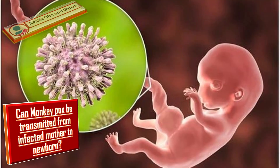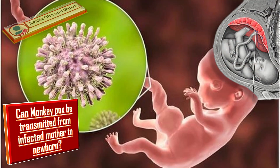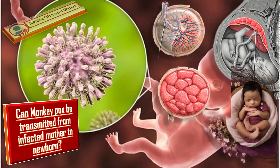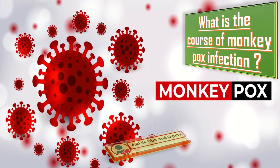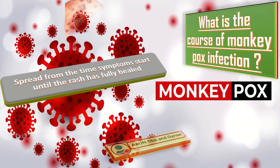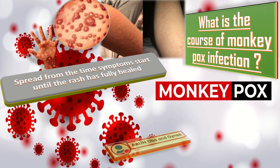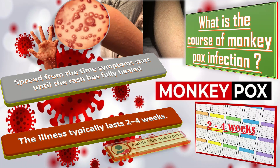Can monkeypox be transmitted from an infected mother to a newborn? Pregnant people can spread the virus to their fetus through the placenta and through close contact with the newborn. MPOX can spread from the time symptoms start until the rash has fully healed and a fresh layer of skin has formed. The illness typically lasts 2–4 weeks. Spread of MPOX from people without symptoms has not been observed. At this time, it is not known whether MPOX can spread through semen, vaginal fluids, or breast milk.